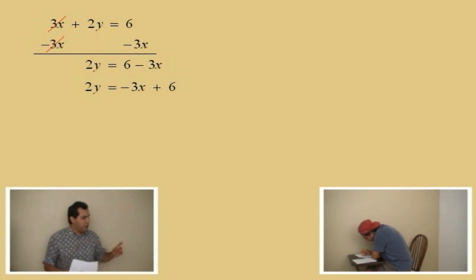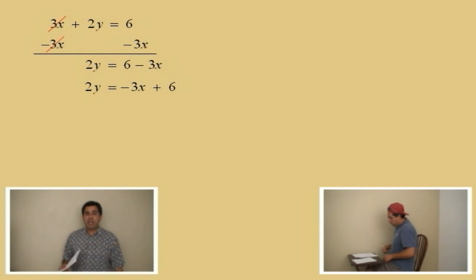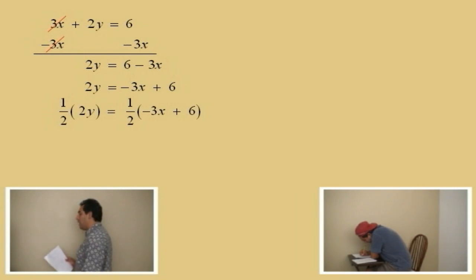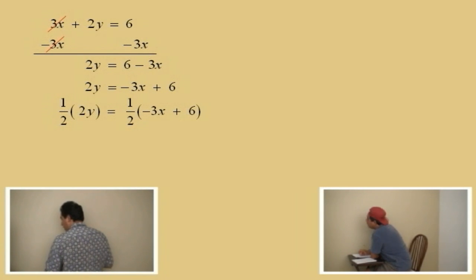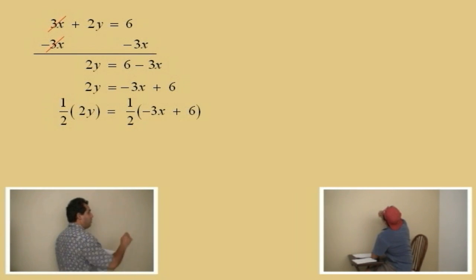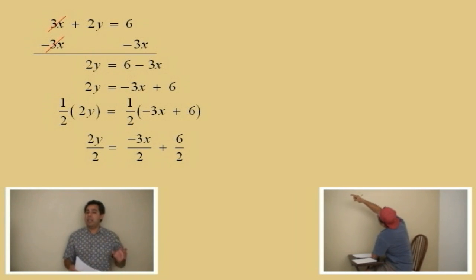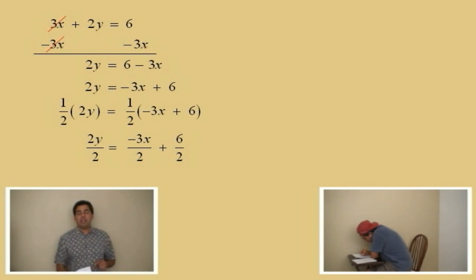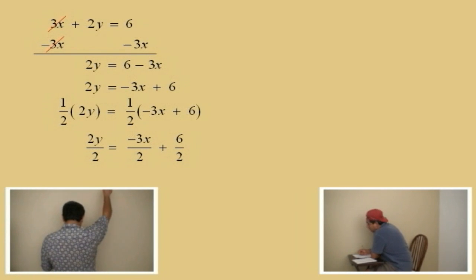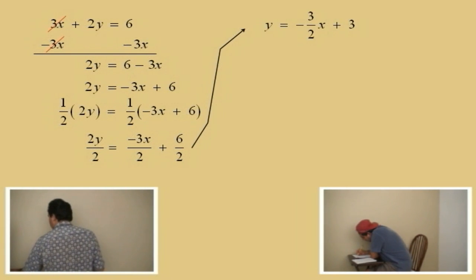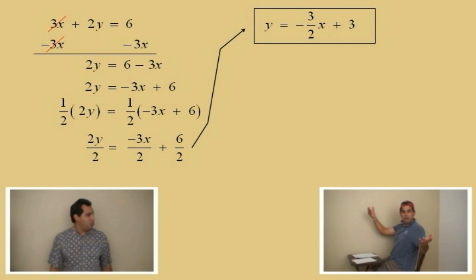Now we've got to solve for y. What do we do, Charlie? Divide both sides by 2, which is the same as multiplying both sides by 1 half. If we multiply both sides by 1 half and distribute that 1 half to the right-hand side, notice everything gets divided by 2. If this is giving you a problem, you can talk to your facilitator and tutor. But get it straightened out before the test. So now, Charlie, what does y equal? Negative 3 halves x plus 3. Very nice, Charlie. Just circle your answer and you're done. That's not too bad, is it?